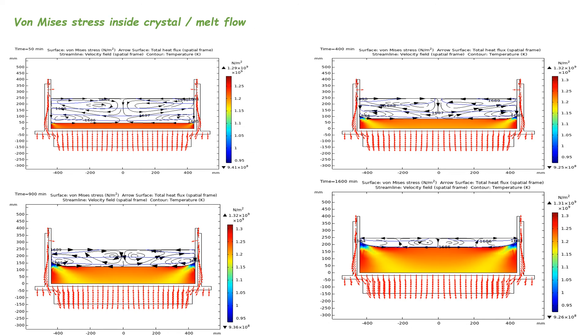We present here the surface fields of the Von Mises stresses inside the crystal during time, and the heat fluxes around the surface with the streamline velocity inside the molten silicon. It can be seen that thermal stresses are minimal at the level of contact of the solidification front with the crucible, where the temperature gradients are also minimal.